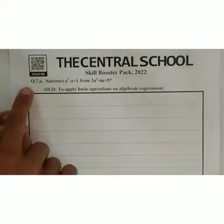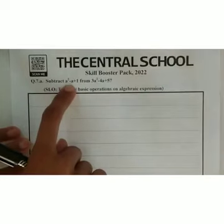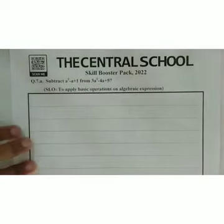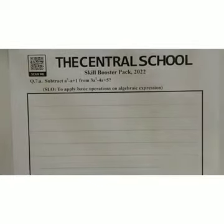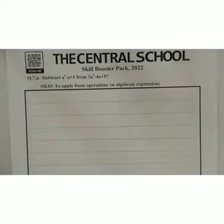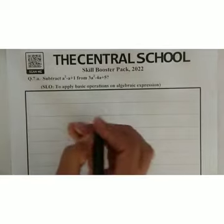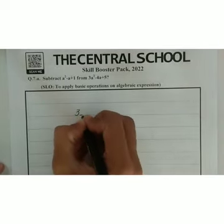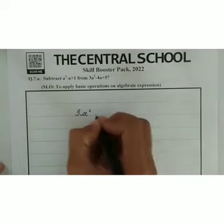Subtract a squared minus a plus 1 from 3a squared minus 4a plus 5. Students, here we have two algebraic expressions and we have to subtract them. Let us start. Students, first we have 3a squared.